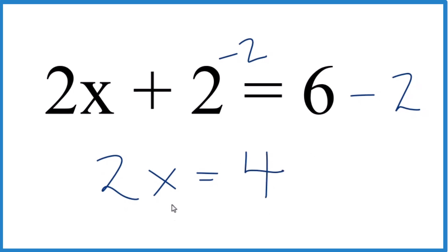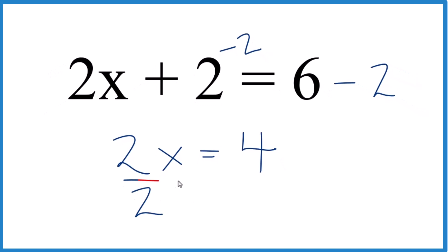At this point, we could divide both sides by 2. So when you do that, 2 over 2 is just 1. So 1x, and we just usually call that x. So those are gone. 4 over 2, so 4 divided by 2, that equals 2.